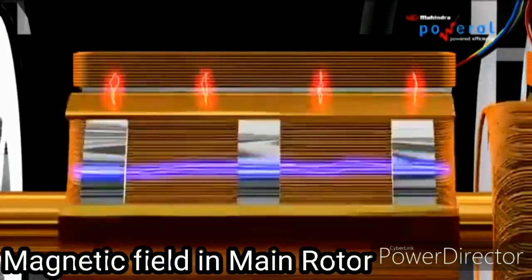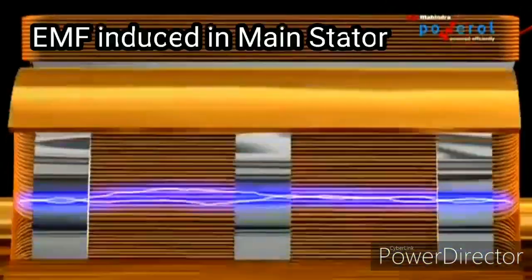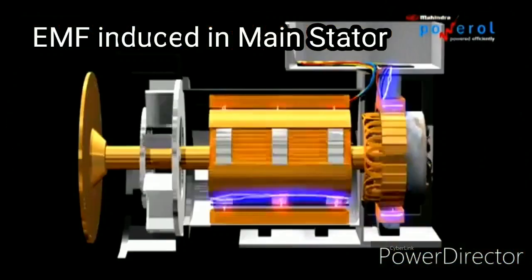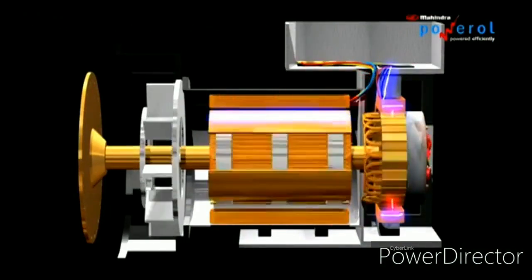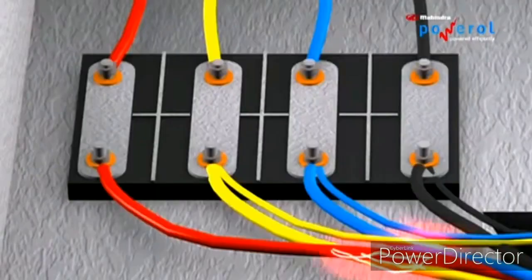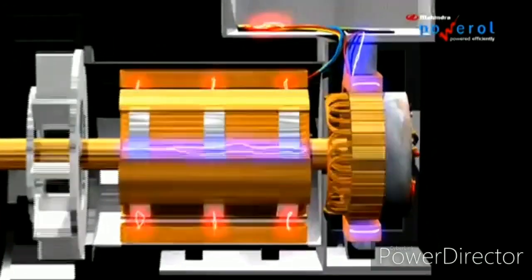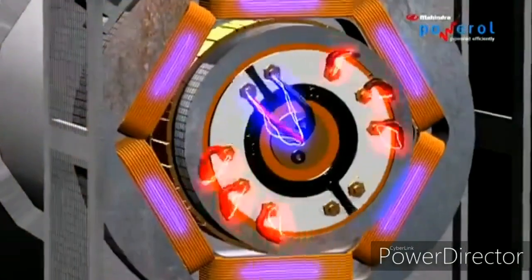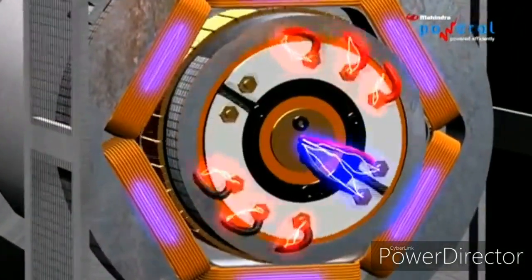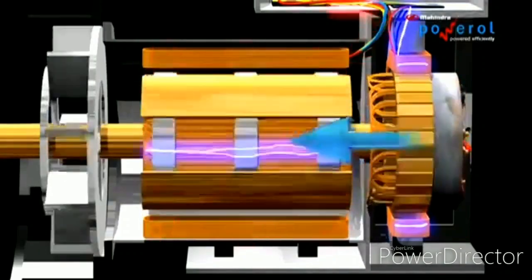Now we can convert the DC to the main rotor. The main rotor has a constant magnetic field. The main stator generates an EMF, which we can load. The main role of the self-excited alternator involves the exciter stator and exciter rotor. This is the pilot generator. This is the self-excited alternator.